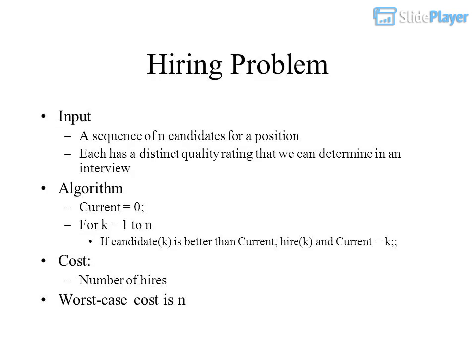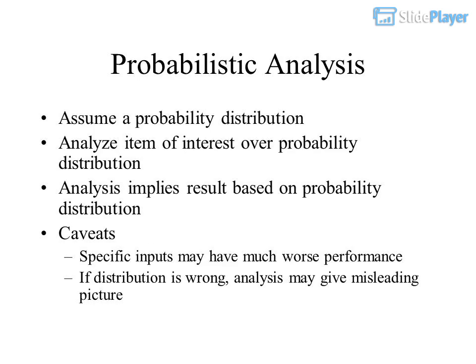The Hiring Problem: given a sequence of N candidates for a position, each with a distinct quality rating determined in an interview, the algorithm sets current equal to 0, then for K equals 1 to N, if candidate K is better than current, hire K and set current equals K. The cost is the number of hires; worst case cost is N.